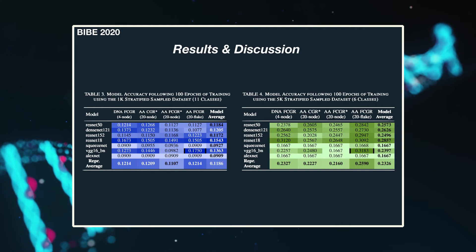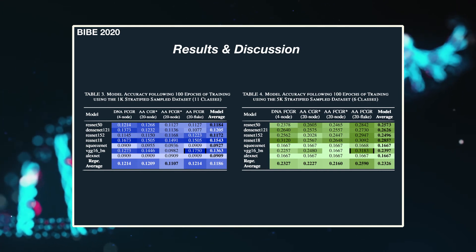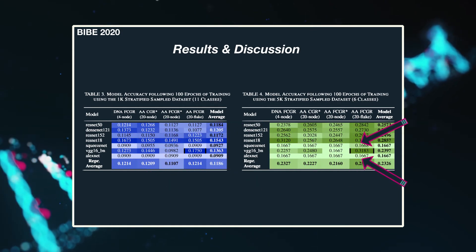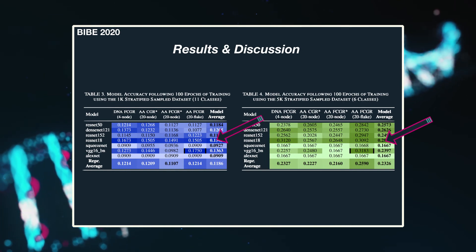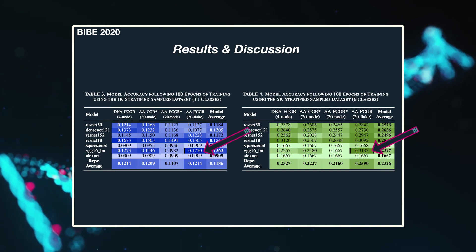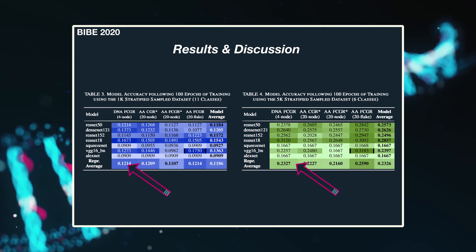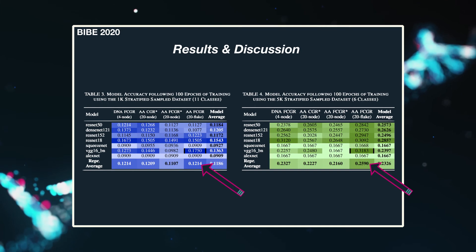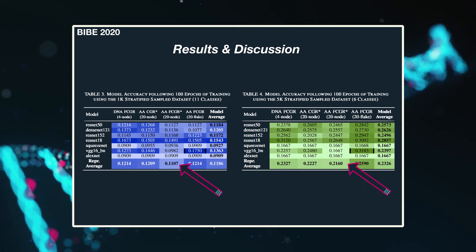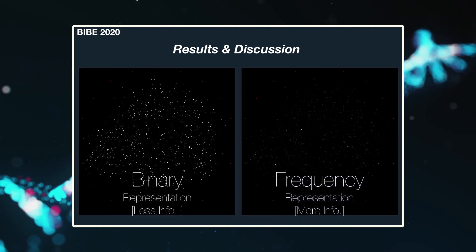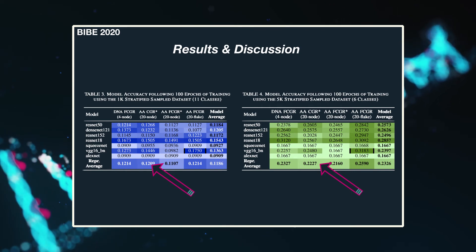We tabulated the performance across the 28 test conditions for each dataset, noting that generally the majority of representation-model pairs appear only to achieve modest accuracy. In fact, both the AlexNet and SqueezeNet models for each dataset do not appear to have learned the task at all and report results equivalent to a random model. While ResNet-18 has the highest average model performance for both datasets and appears to have benefited from all representations, it is the VGG-16 model with batch normalization that has the highest reported accuracy using the 20-flake representation in both cases. Interestingly, both the n equals 4 DNA FCGR and the n equals 20 amino acid FCGRs share the highest average performance among the representations over both datasets. Contrary to expectation, while the n equals 20 amino acid FCGR star theoretically contains greater information by capturing the relative frequency of pixels, the binarized n equals 20 amino acid CGR star had a larger average performance across the models for both datasets.